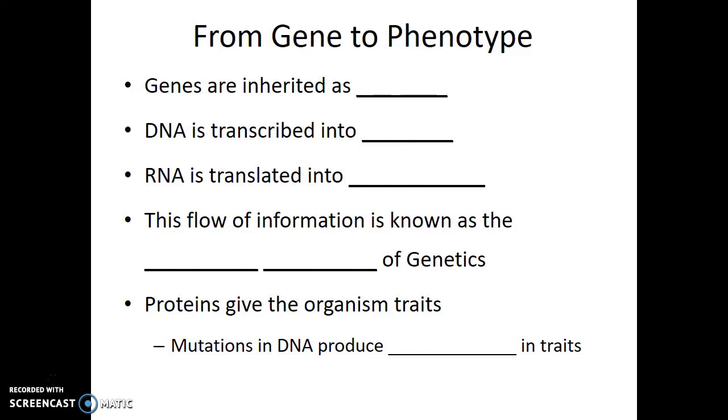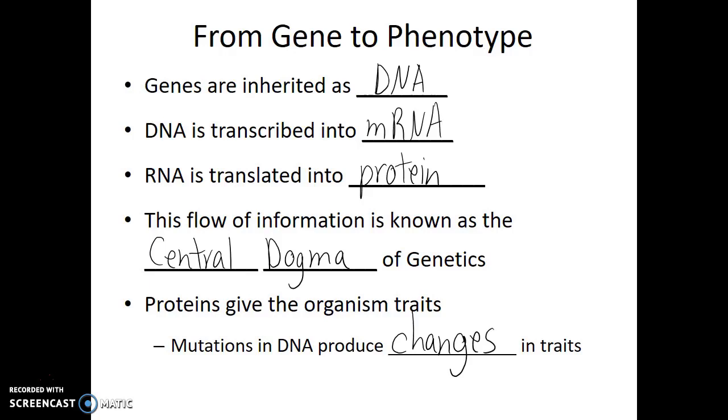So to bring this discussion of the central dogma to a close, remember that genes are inherited as DNA. DNA is transcribed into mRNA during transcription. RNA is translated into protein during translation. This flow of information is known as the central dogma of genetics. Proteins give organisms their traits, and so mutations in DNA end up producing changes in the traits of the organism.